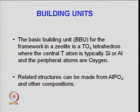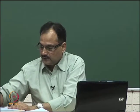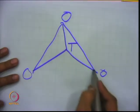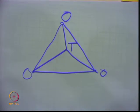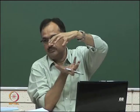The structure building unit (SBU) is made of primary building unit and secondary building unit. The basic building unit for the zeolite framework is TO₄ — a silicon tetrahedron where the central T-atom may be silicon or aluminum and the peripheral atoms are oxygen. The structure can also be made in the form of ALPO₄ — aluminophosphate SAPO-type zeolites, where phosphorus replaces silicon in the ring.